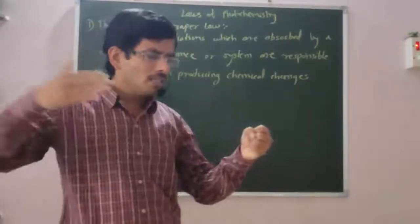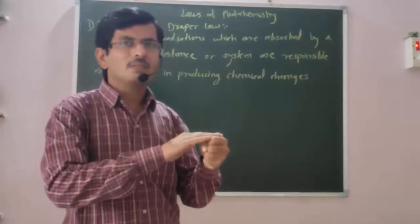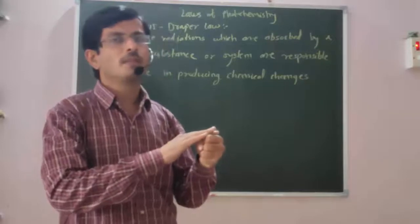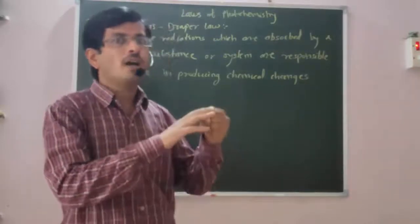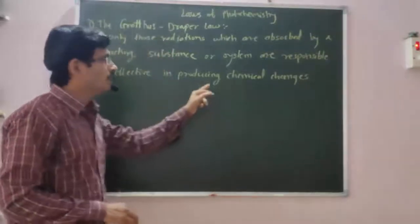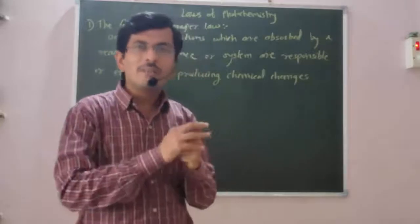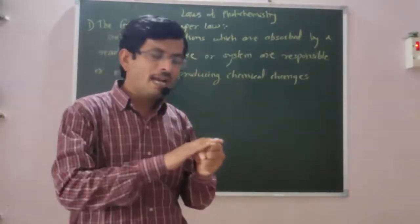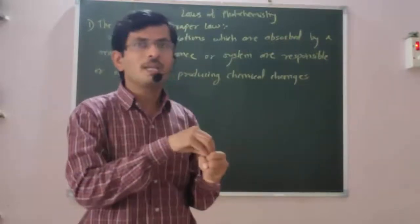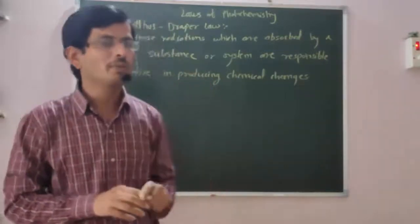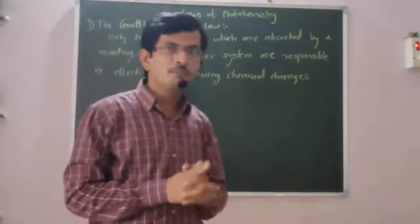Suppose this is the reacting system and light radiation falls on this reacting system. Whatever light radiation this reacting substance or reacting system absorbs, only those radiations are responsible or effective in producing chemical changes. Only the light radiation absorbed by the reacting system will produce chemical changes. This is the statement of Grotthuss-Draper law.